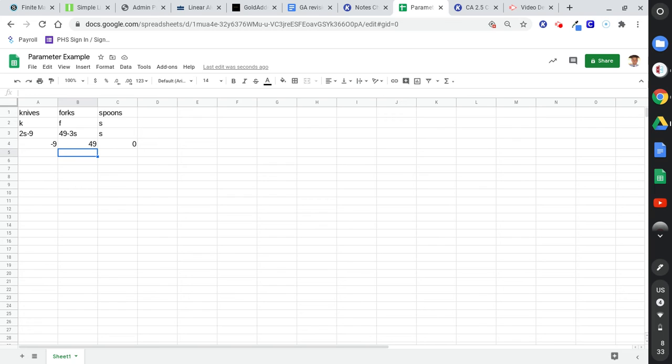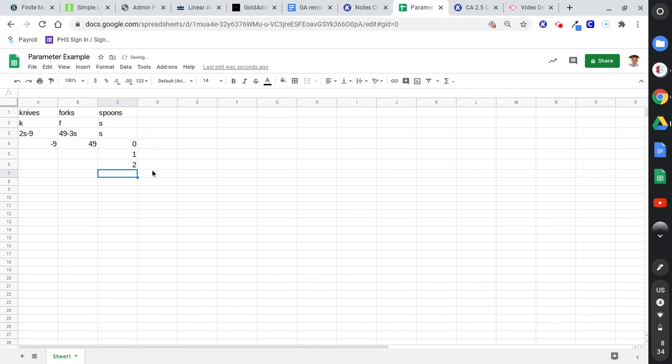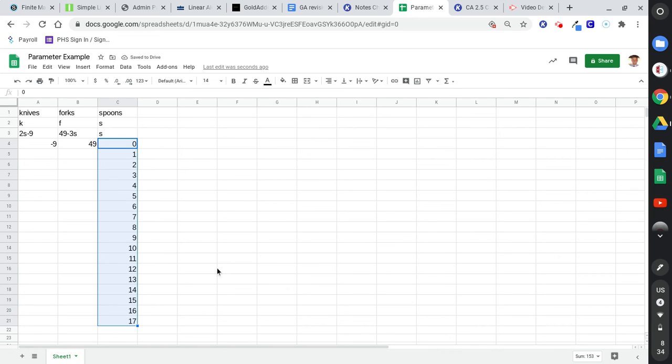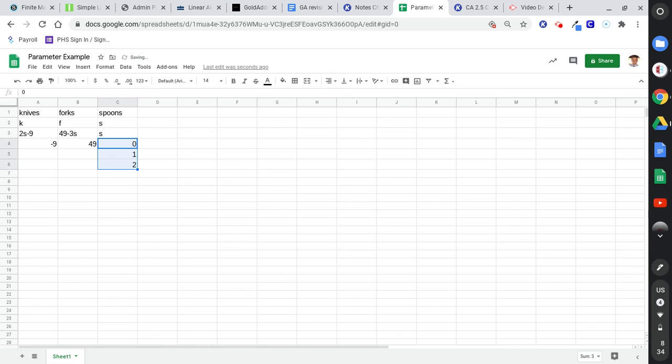So negative 9 comma 49 comma 0 is an ordered triple that has the desired form. Does anybody see anything wrong with this as a solution, though? You can't have negative 9 knives. So watch what I'm going to do. Click and hold down. Drag over to highlight all three. You see this blue square down at the bottom right? I'm going to go one spoon, two spoons. And if I highlight that and drag down, it'll count for me. I mean, I guess you could just type in 1, 2, 3, 4, 5, 6, 7, 8, 9. Did you guys see what I did? I typed in a 1 and a 2, and you could continue typing 3, 4, 5, you know, as you go down. But you can automatically do it if you drag to highlight and then drag.